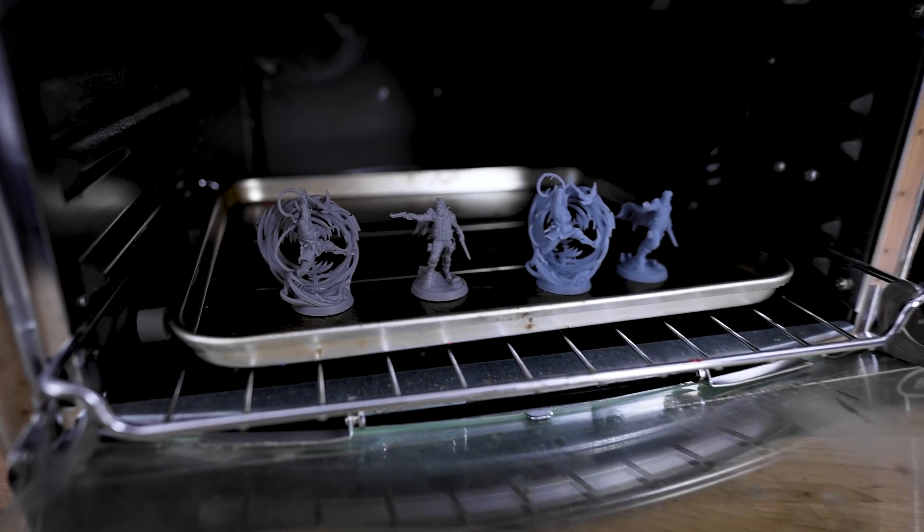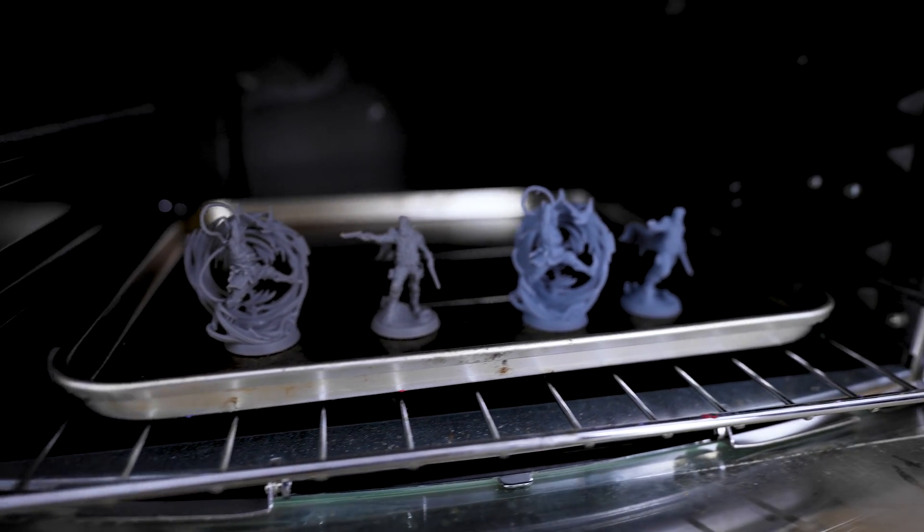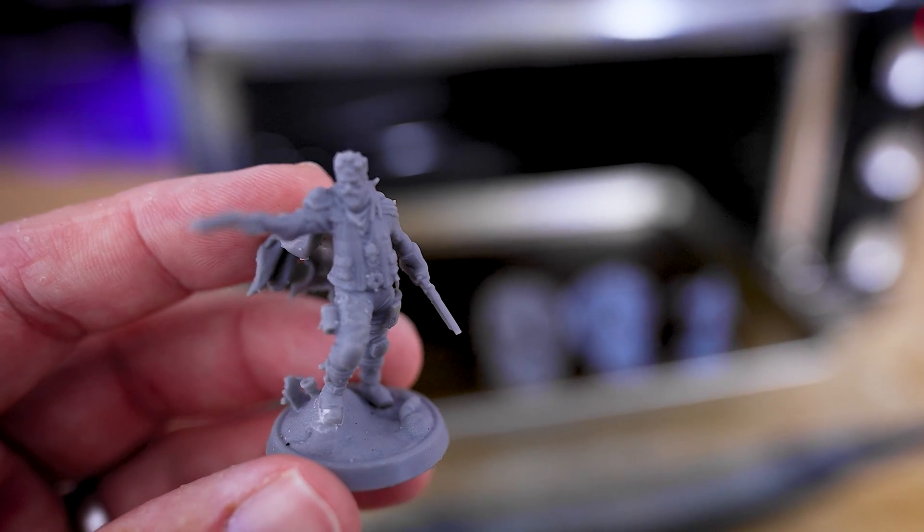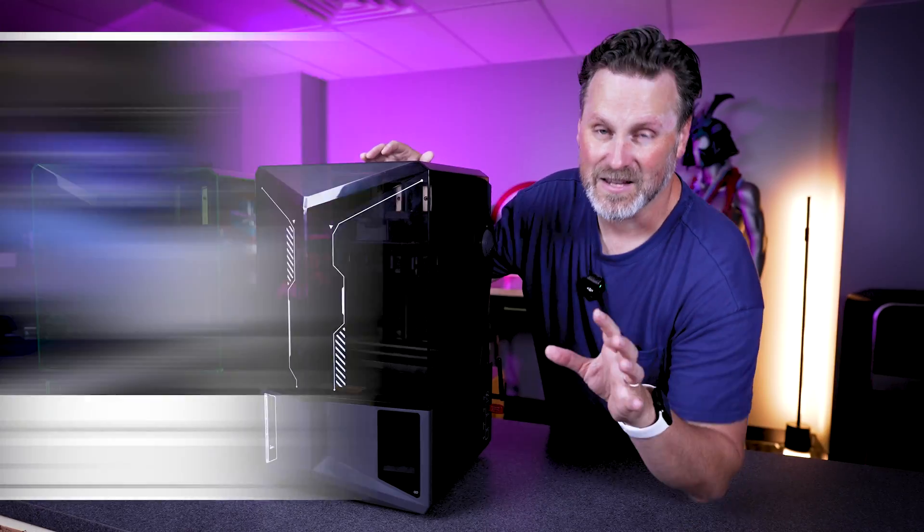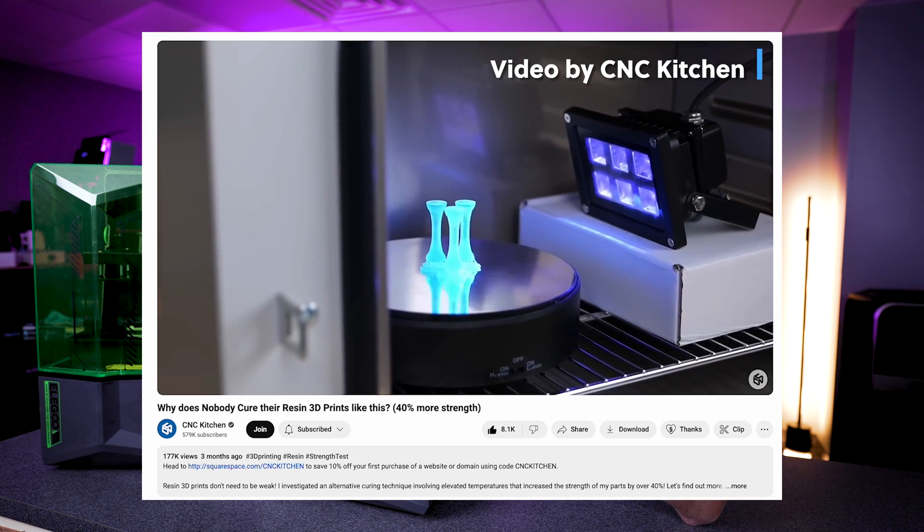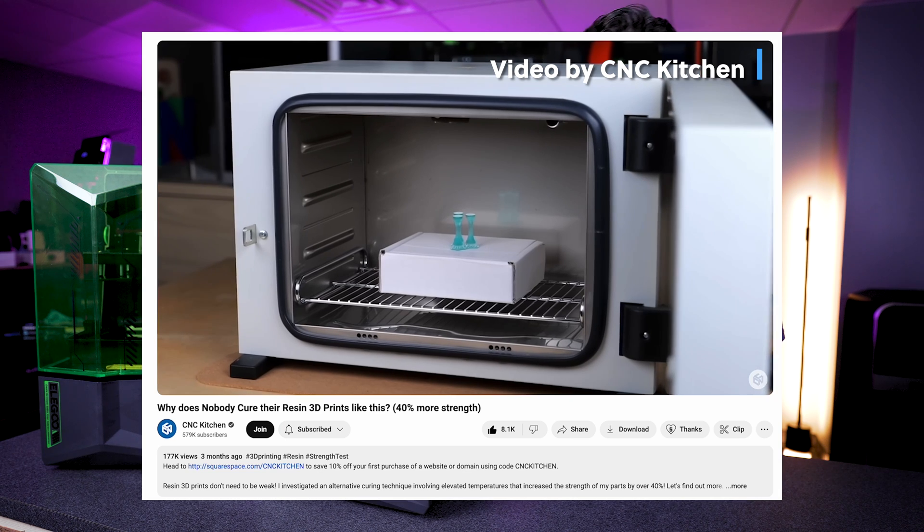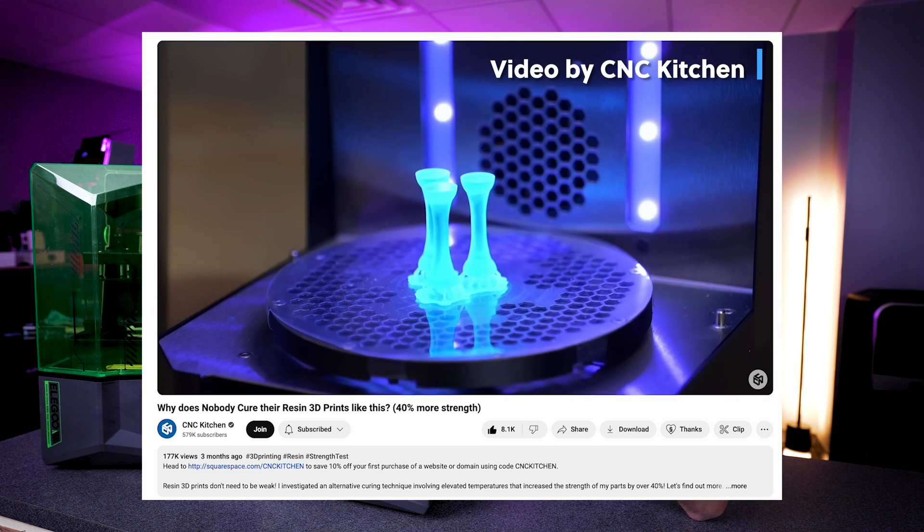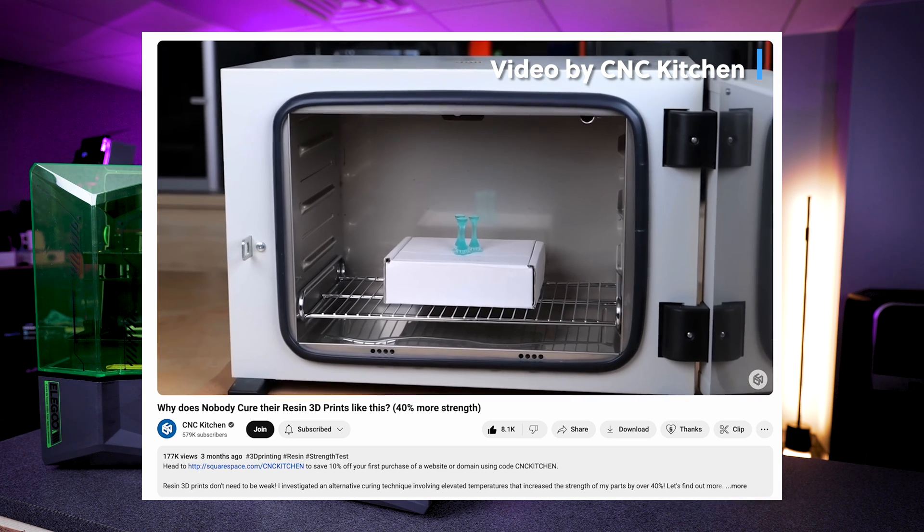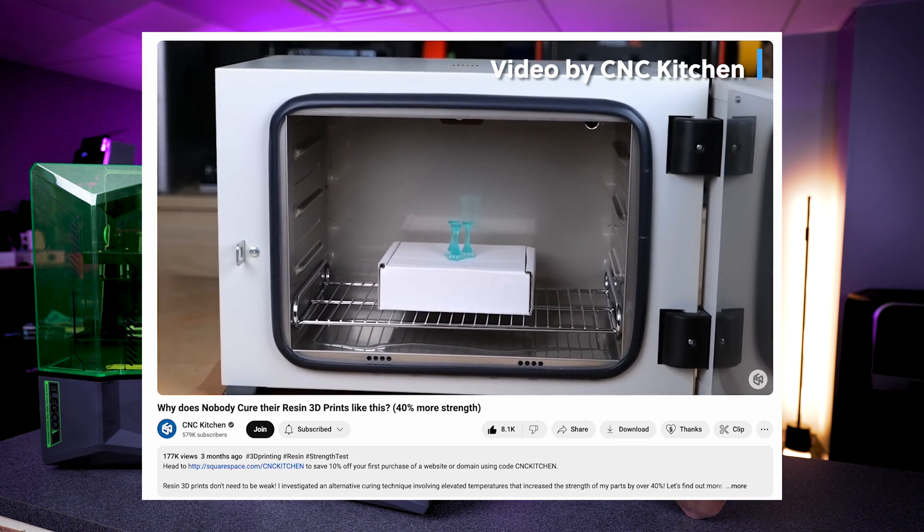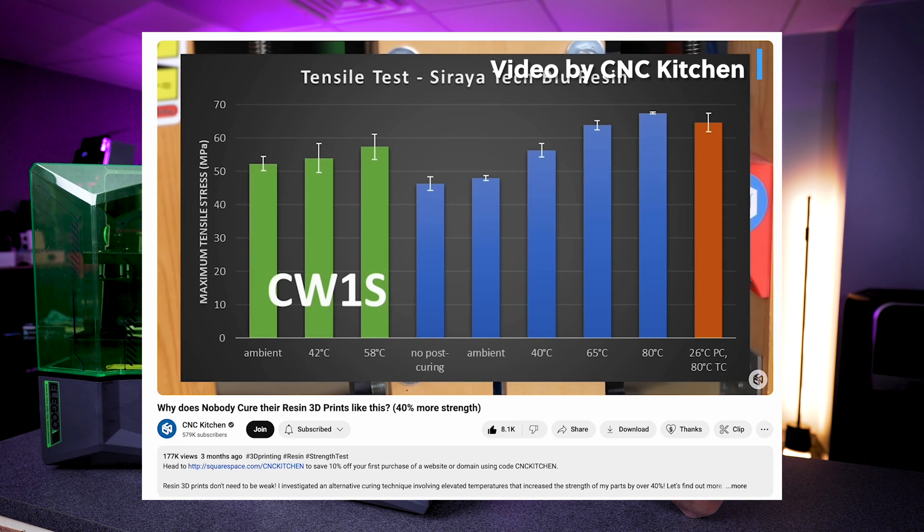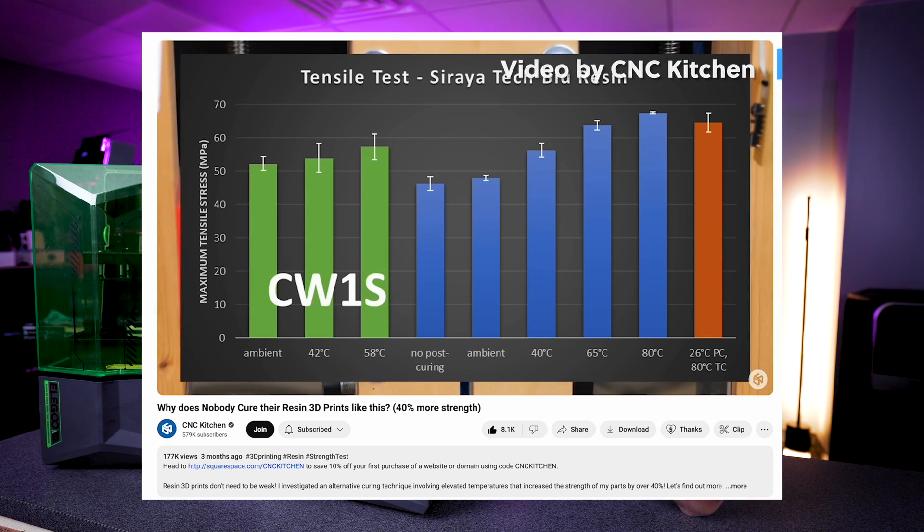We're gonna be putting them inside of a toaster oven and heating them up for about an hour to see what happens to our 3D prints if it adds a little bit more rigidity to them. CNC Kitchen actually did a video on this topic and how it was able to add a good bit more strength to his prints and even found out that you don't even need to cure it and heat it at the same time. If you just cure it normally and then go off and bake it for a little while to add more heat to it, it will end up hardening and adding a little bit more rigidity to your resin 3D prints.